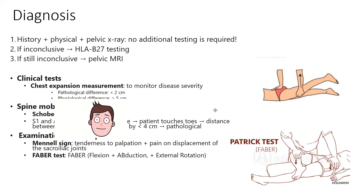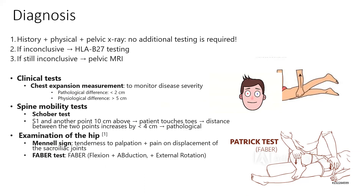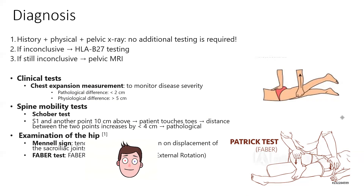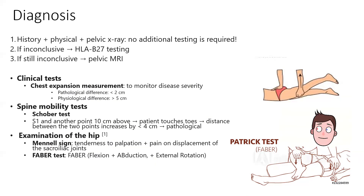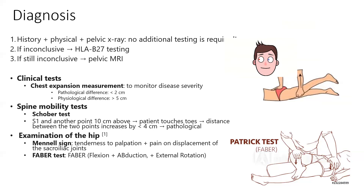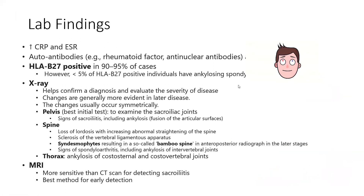Chest expansion should also be measured — pathological is less than 2 centimeters difference in chest circumference between inhalation and exhalation. Two other special tests assess the hip and sacroiliac joint: Menell's sign, which is tenderness on palpation of the sacroiliac joint with anterior displacement, and the FABER test — Flexion, Abduction, External Rotation of the hip.